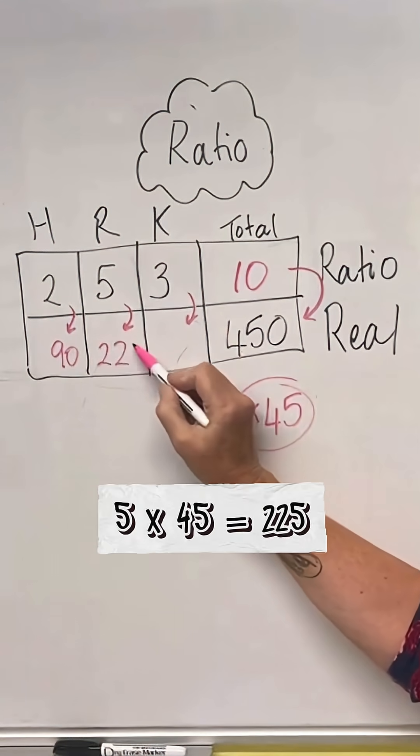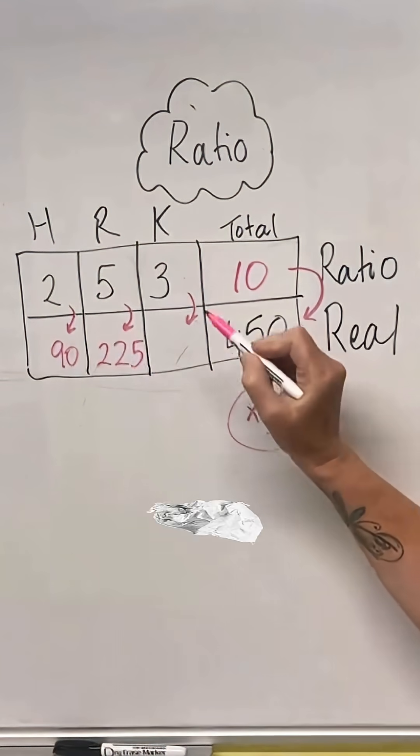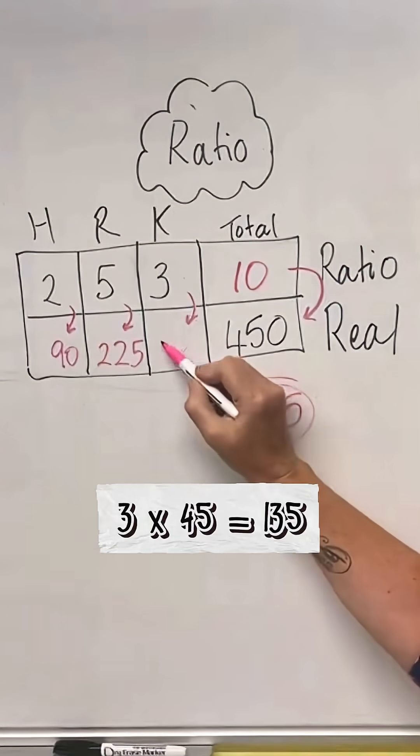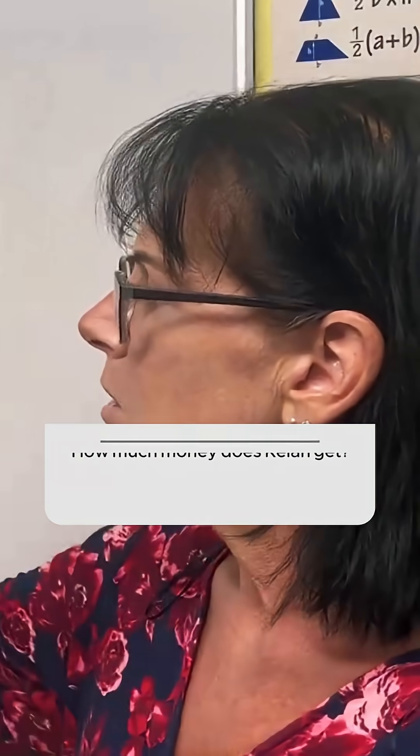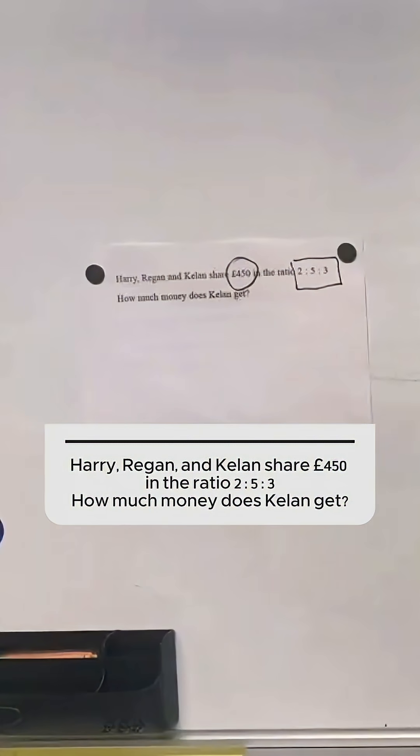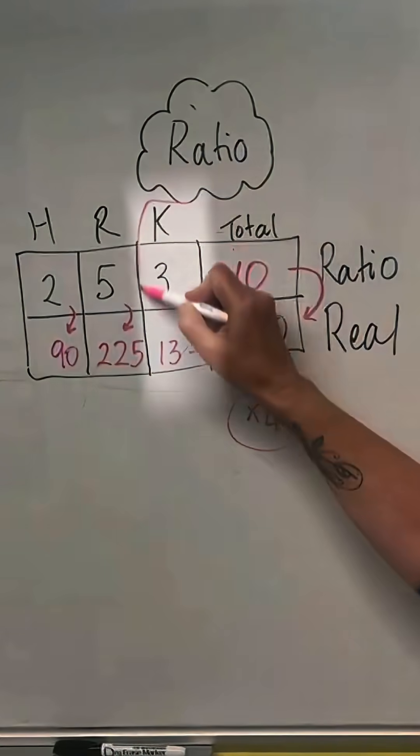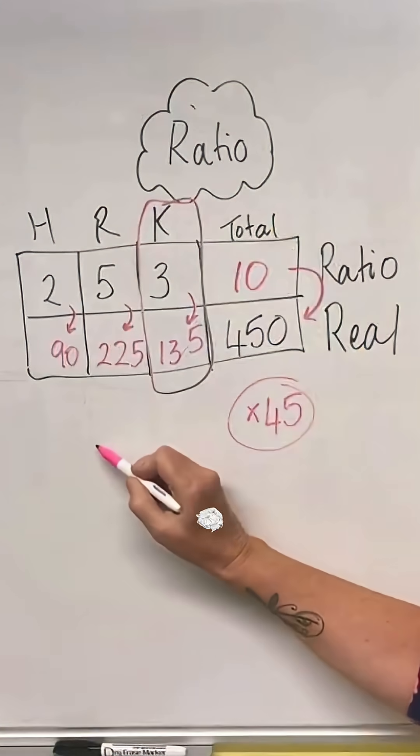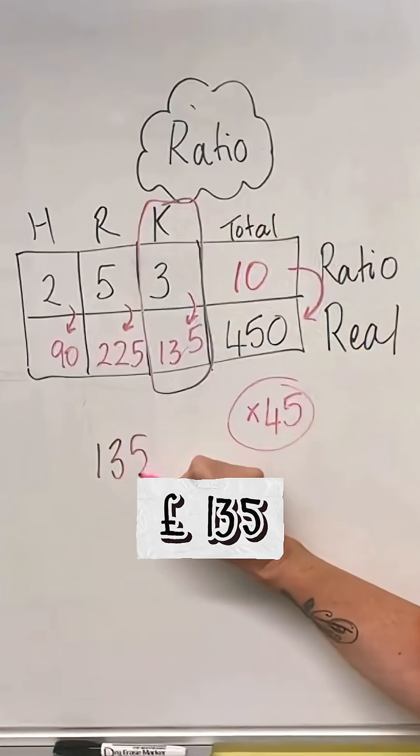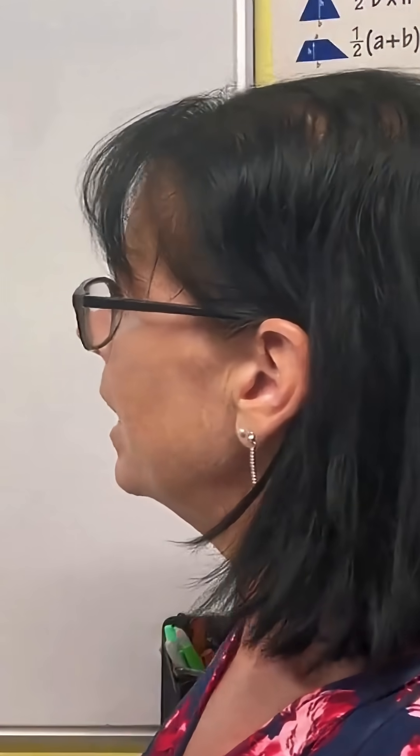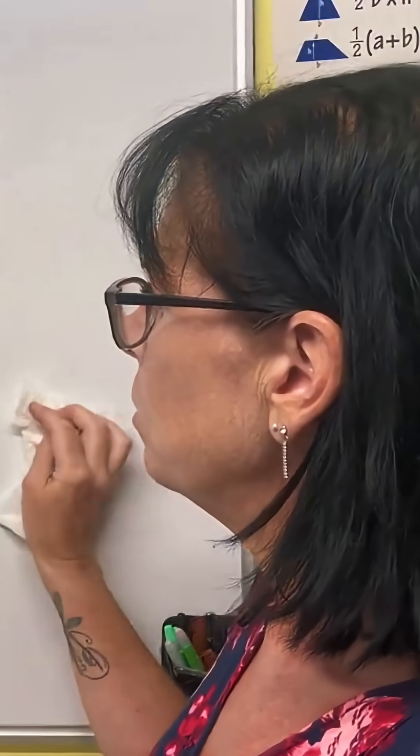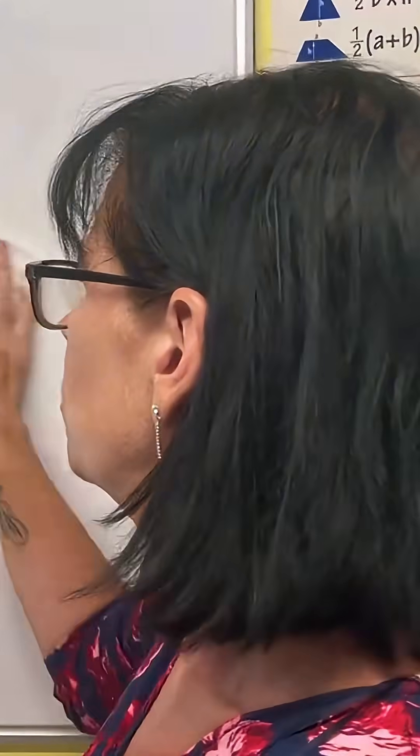Now let's go back to the question. The question says how much money does Keelan get? Keelan was this one here, so the answer is 135 pounds. So that is how we use our ratio box to solve ratio questions.